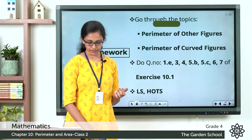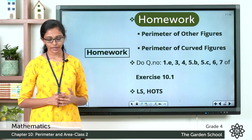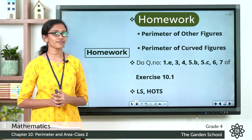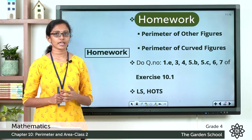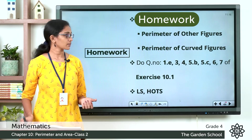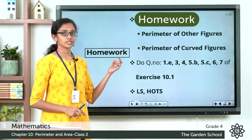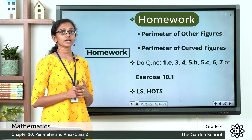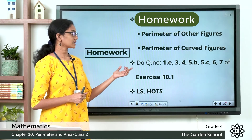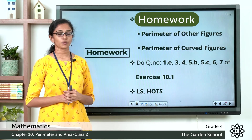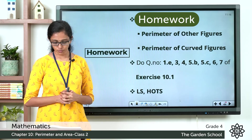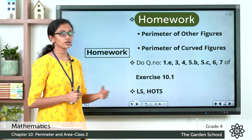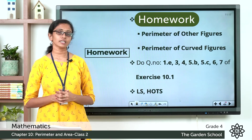Now go through the topic on perimeter of other figures and perimeter of curved figures on pages 142 and 143 of your textbook. Then move on to exercise 10.1 and complete questions 1e, 3, 4, 5b, 5c, 6, and 7. Once done, move on to the life skills question on page 145 and also the higher order thinking skills question on the same page.